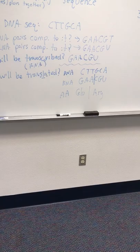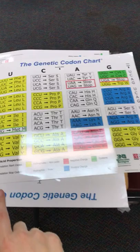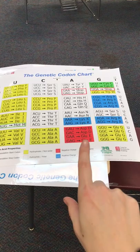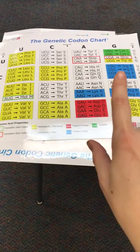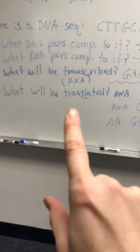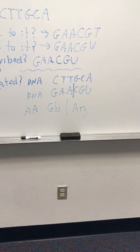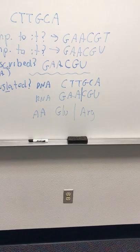Then break the RNA into codons and look them up in the codon chart. For example, G-A-A codes for glutamate, and C-G-U codes for arginine. So when translating, you go DNA → RNA → amino acid: DNA A-T-G-C becomes RNA A-U-G-C, then look up each codon in the chart.